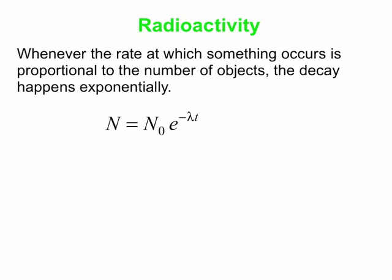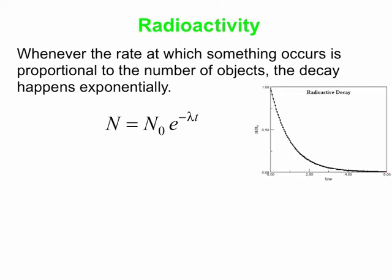We've got an equation that says N, the number of radioactive nuclei you have right now, at some time T after we started following these things, is N0, the number you had at T equals zero, times e to the minus lambda T. And if you draw a graph of this, you get this nice exponential decay kind of curve.